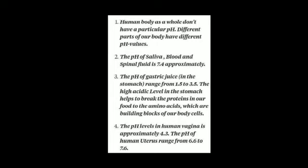The human body as a whole does not have a particular pH. Different parts of our body have different pH values. The pH of saliva, blood, and spinal fluid is approximately 7.4. The pH of gastric juice ranges from 1.5 to 3.5. The high acidic level in the stomach helps to break down proteins in our food into amino acids, which are the building blocks of our body cells. The pH level in the human vagina is approximately 4.3, and the pH of the human uterus ranges from 6.6 to 7.6.